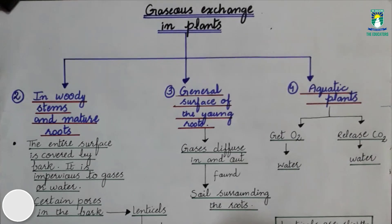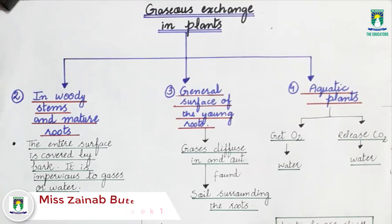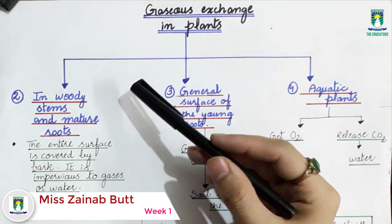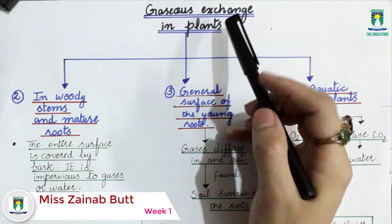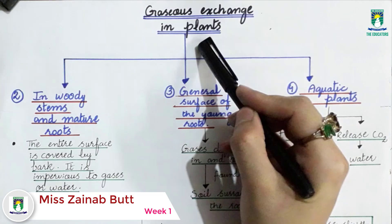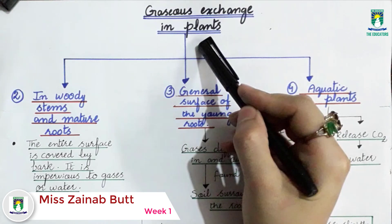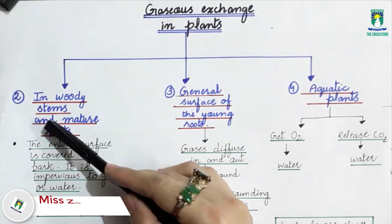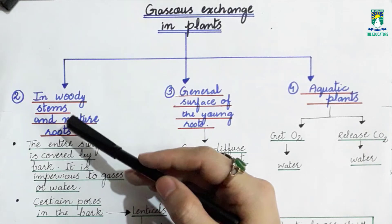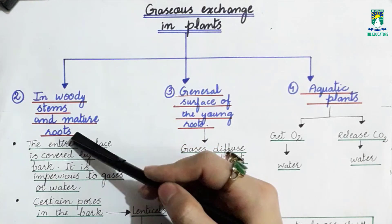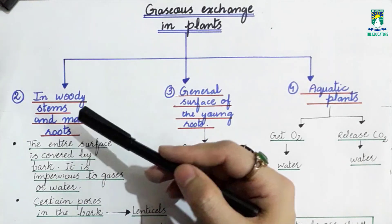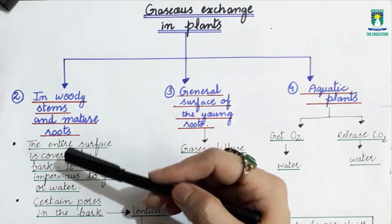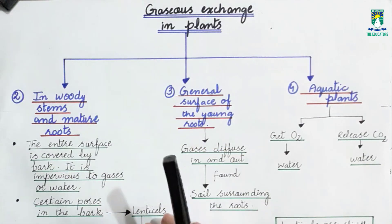We will now discuss the remaining structures involved in gaseous exchange in plants — specifically how gaseous exchange occurs in woody stems and mature roots, and what structures are present in these parts to facilitate the process.